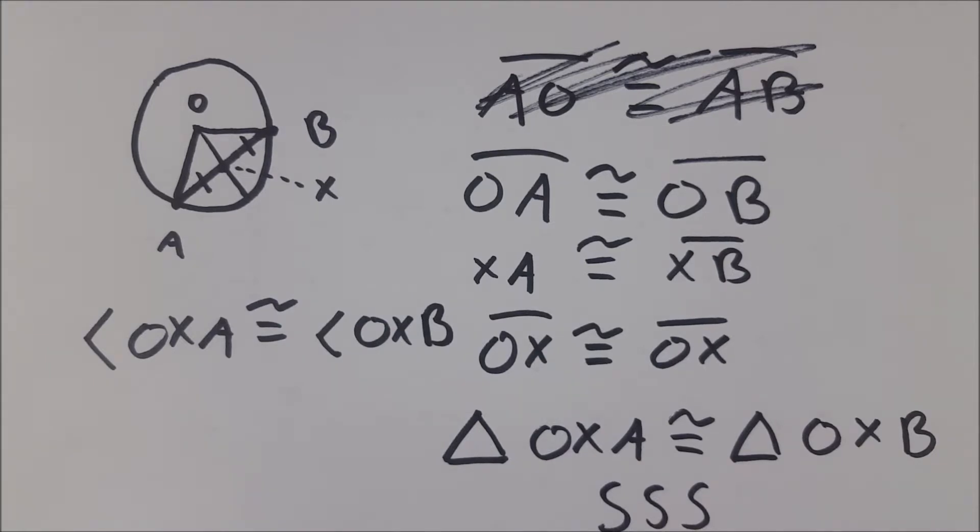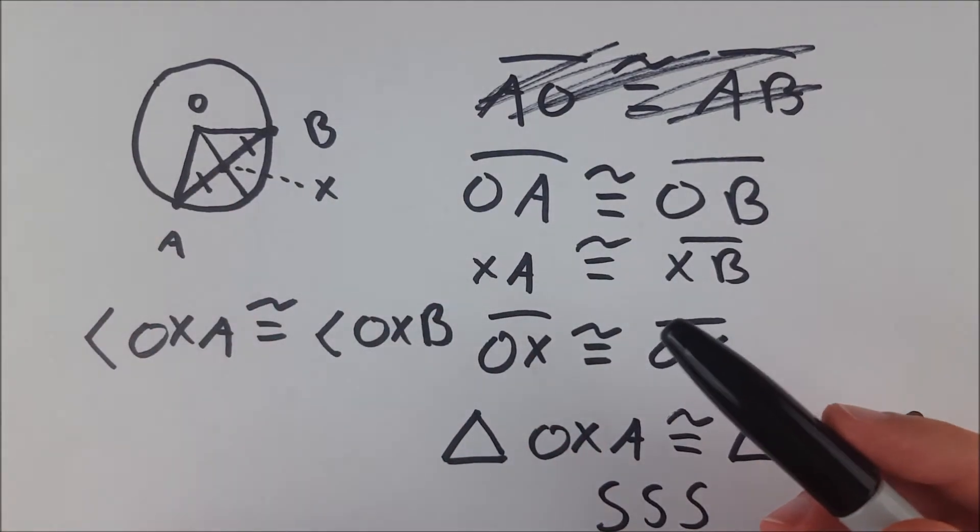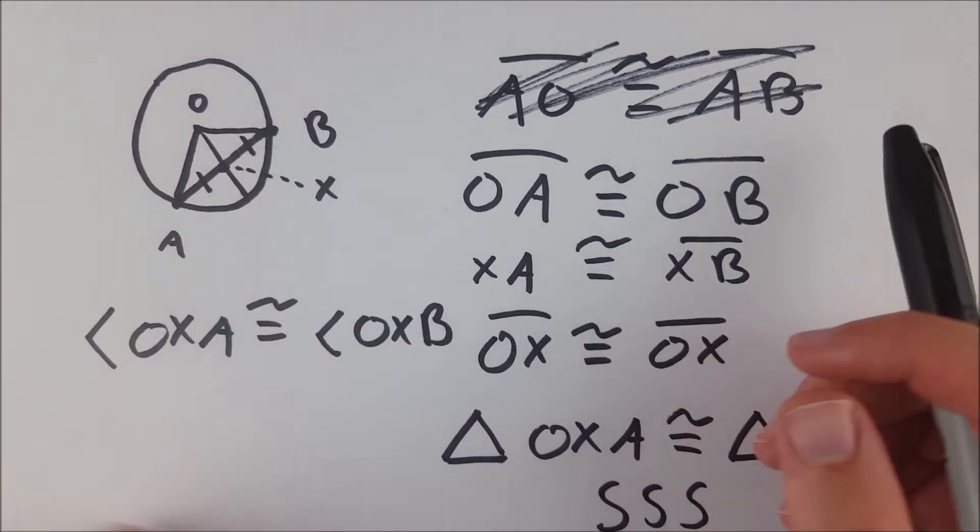If you already know that, then you're done. If you don't, then I'll leave that to you to prove. I also have a video on proving that congruent supplementary angles have to be 90 degrees, so you can check that out if you want, but it's very easy to show from here that these two angles are 90 degrees. Therefore, by definition, this radius is perpendicular to this chord.